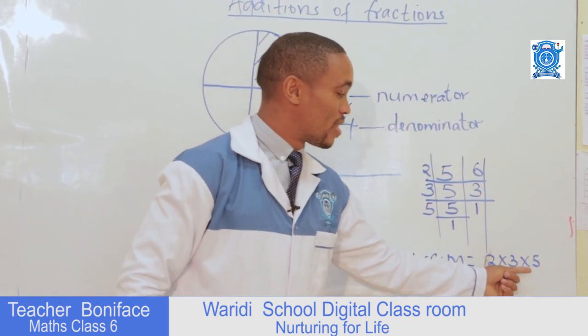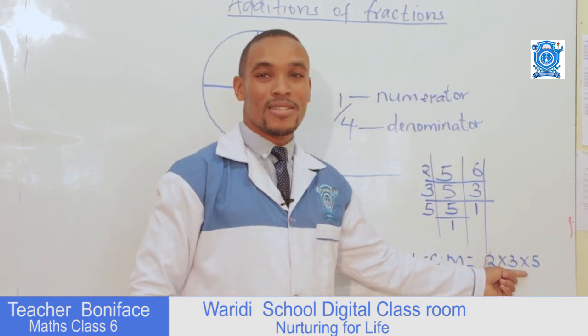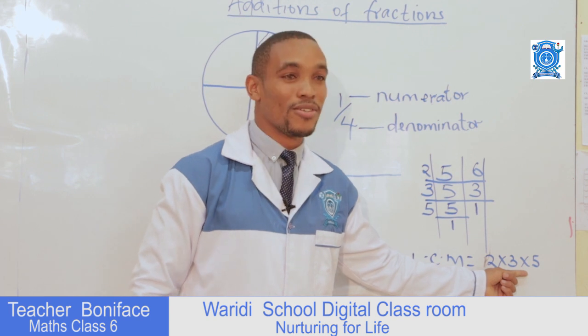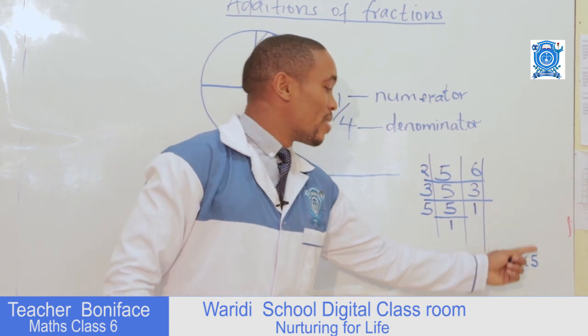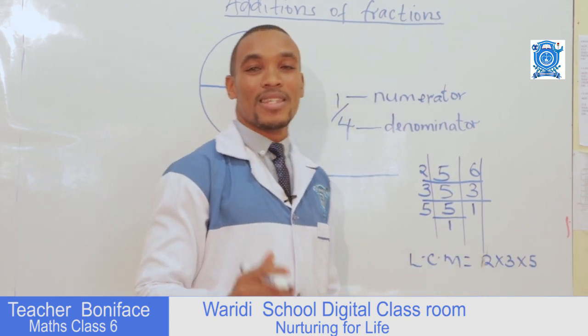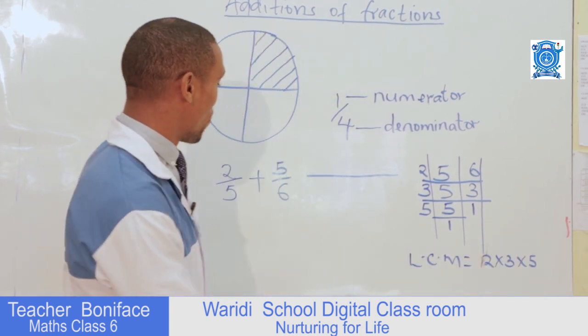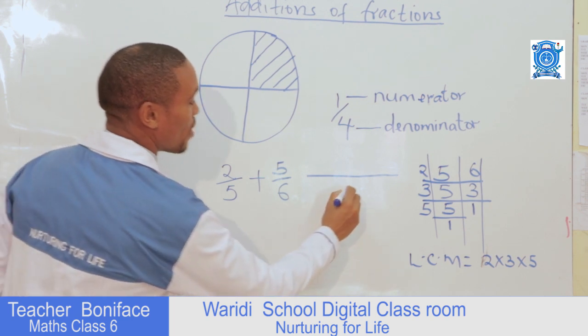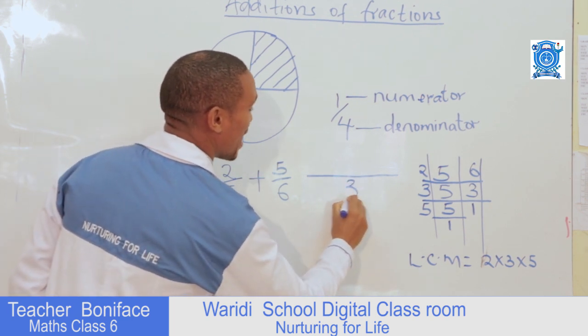Two times three is six, and six times five is thirty. So our LCM is thirty.